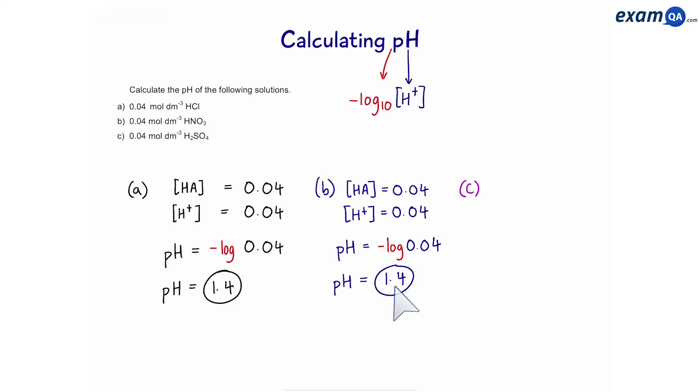Let's go on to C. Now, here we have the concentration of acid again, 0.04. However, sulfuric acid is a diprotic acid. That means, to work out the concentration of hydrogen ions, we're going to times it by 2. The rest is the same as the previous ones. To find pH, we're going to do minus log of hydrogen ions, and finally, that gives us 1.10.